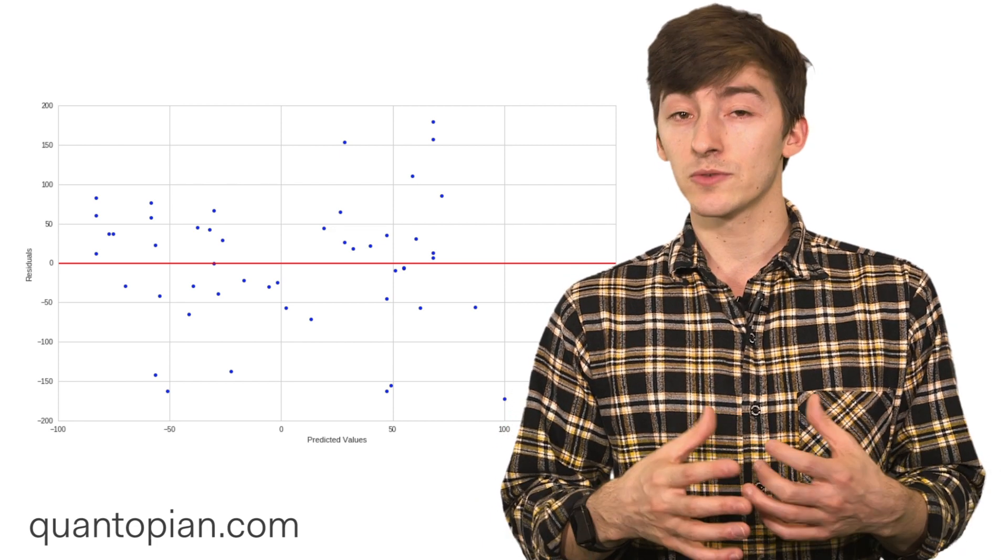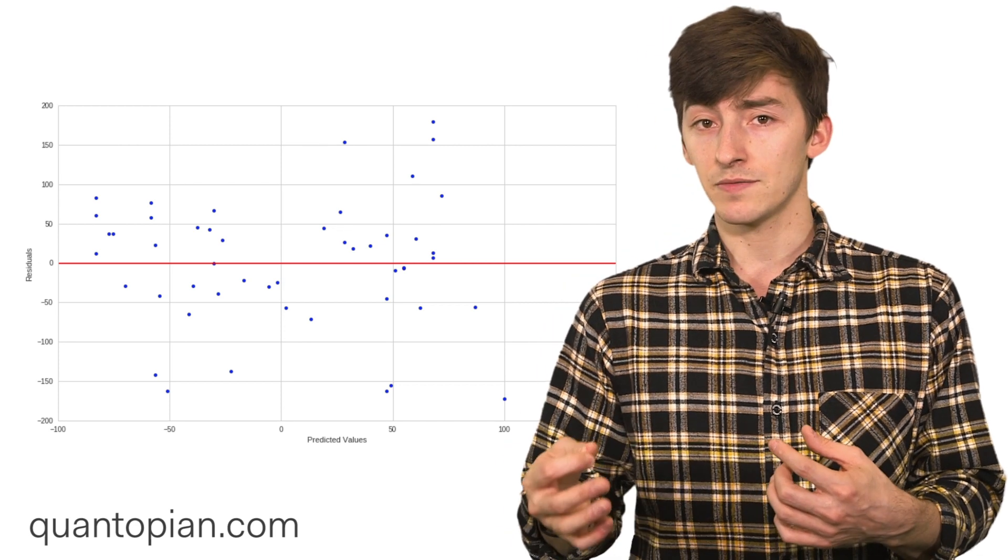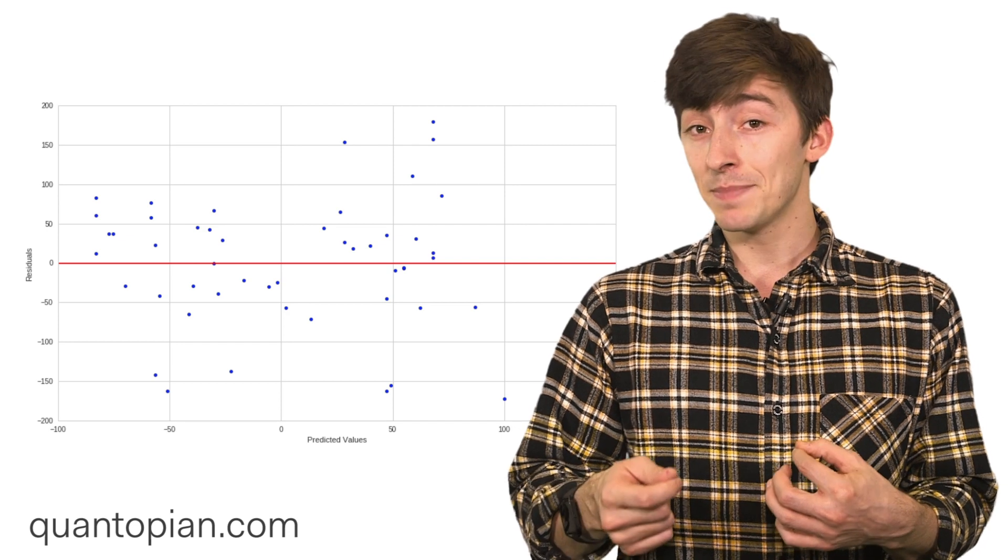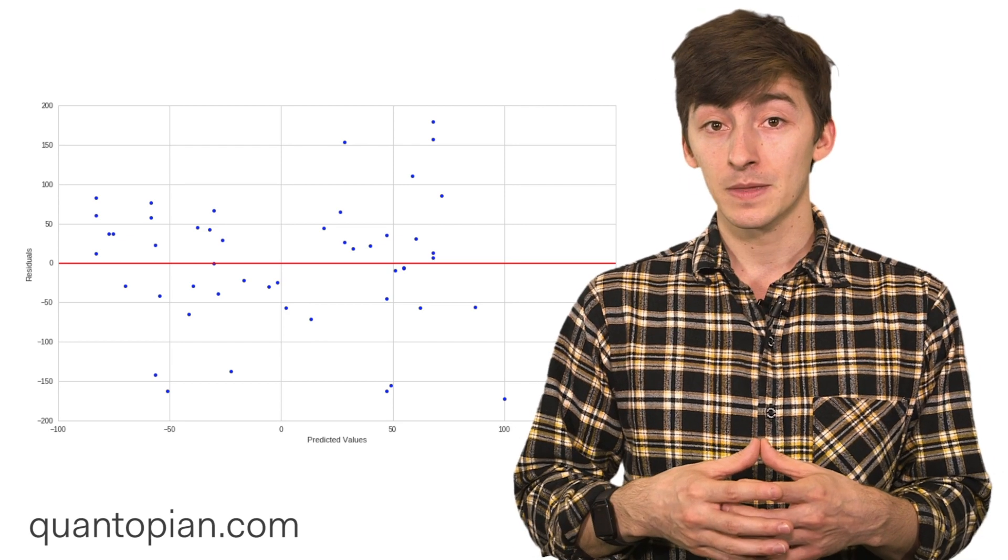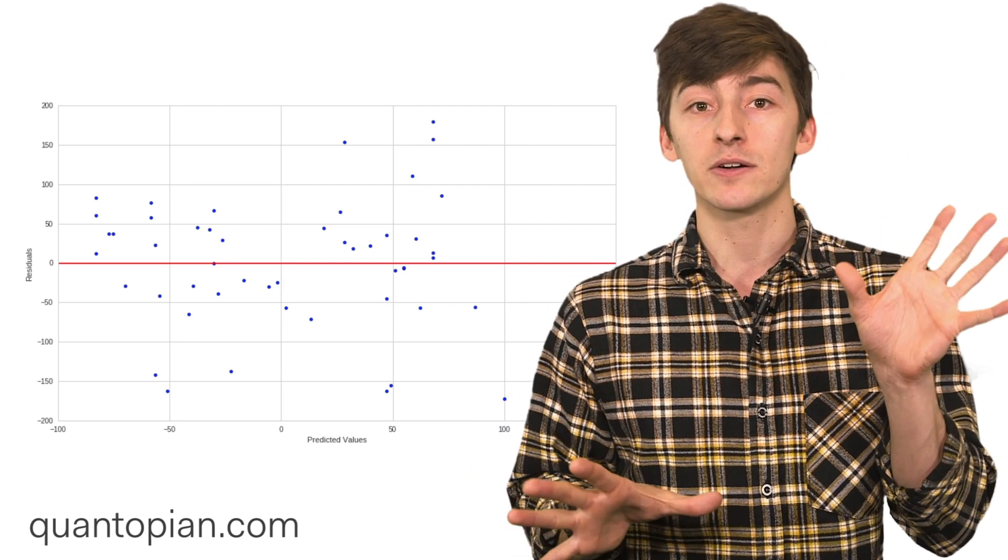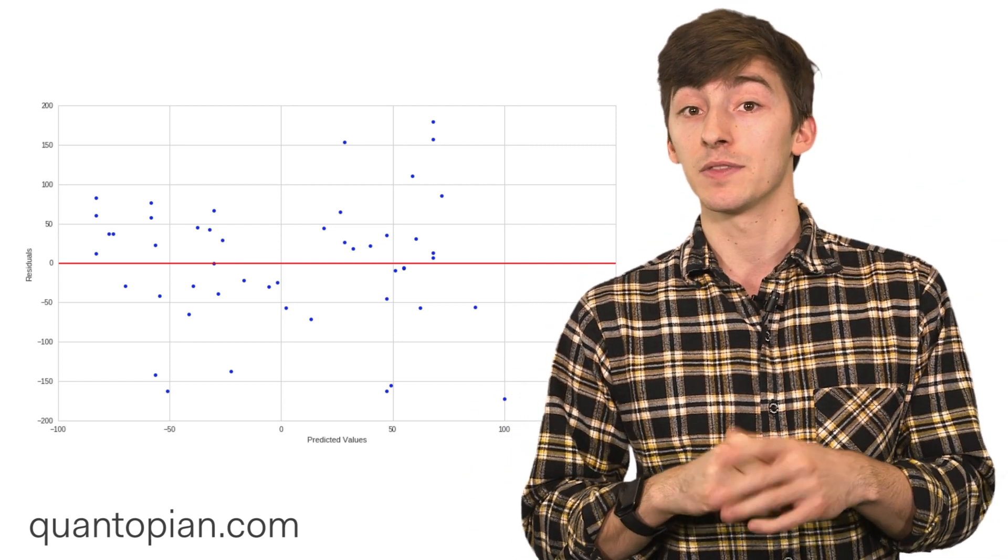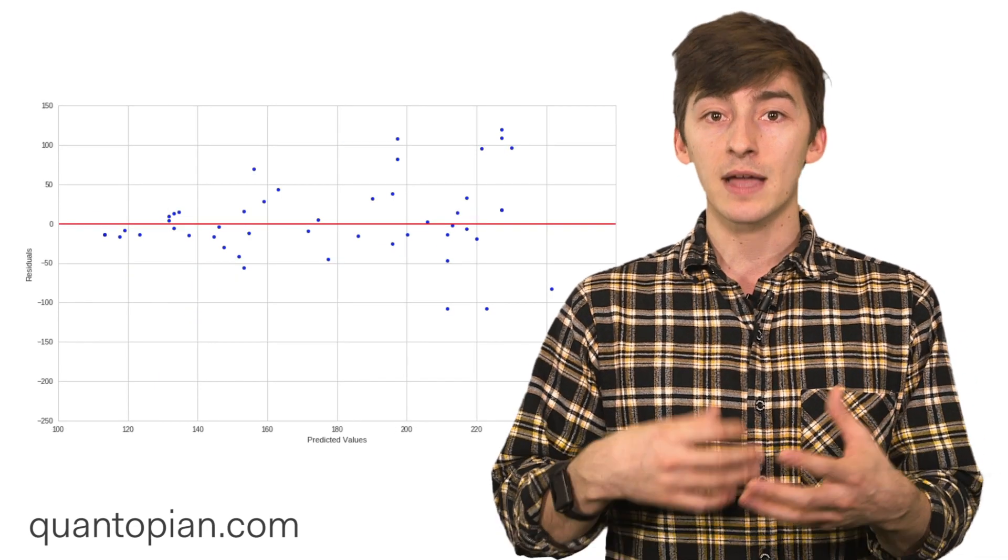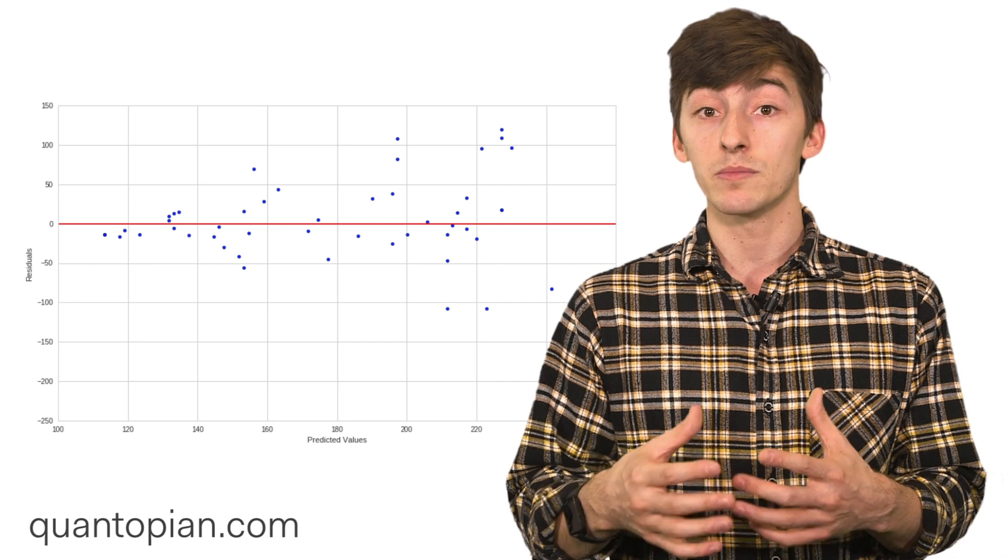Another is that the residuals, the manifested differences between the predictions of your model and the observations that you use to train the model, are independent and identically distributed. This will manifest as just a cloud of scattered points when you plot the observations versus the model predictions. If there's any sort of trend in this residuals plot, then that could indicate something is wrong with your model.